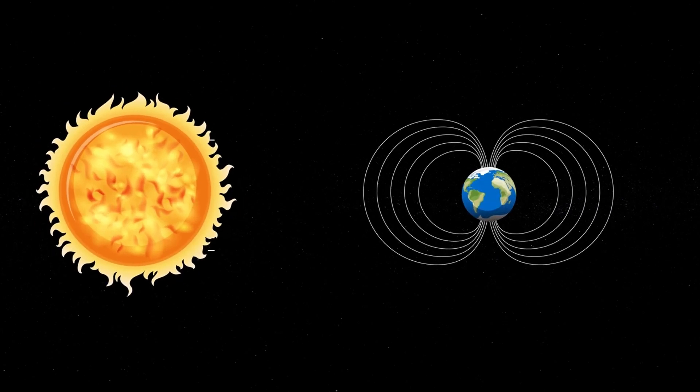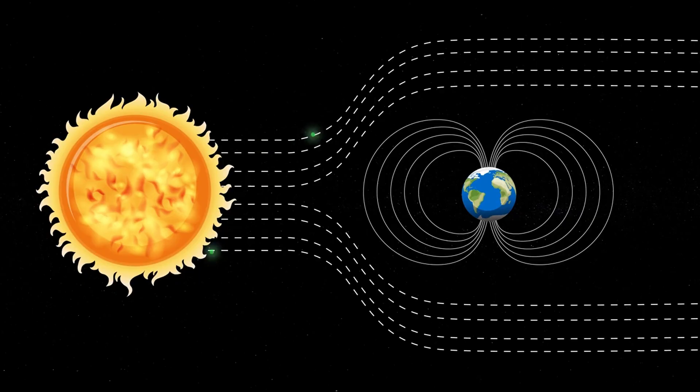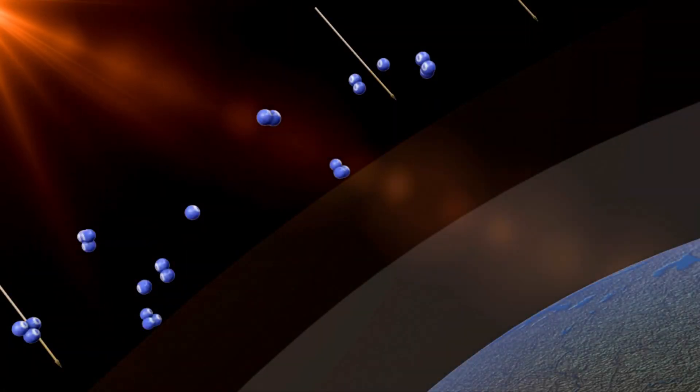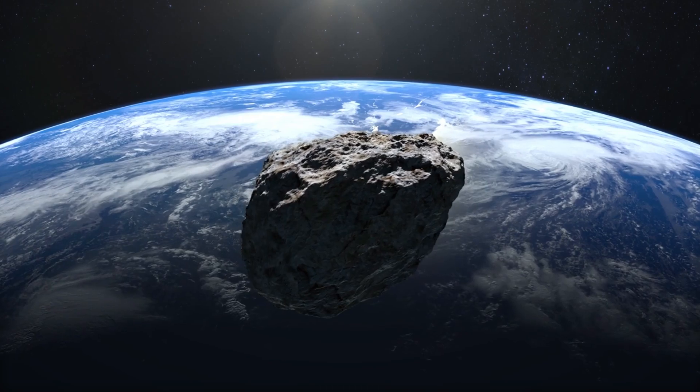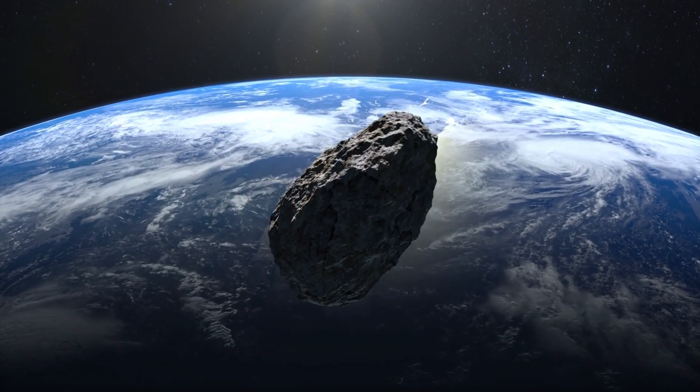One of the main threats to Earth comes from the solar wind, a stream of charged particles emitted by the Sun. Without the magnetic field, these particles would strip away the ozone layer, which protects us from the Sun's harmful ultraviolet radiation. The magnetic field deflects these particles, preventing them from reaching the Earth's surface.